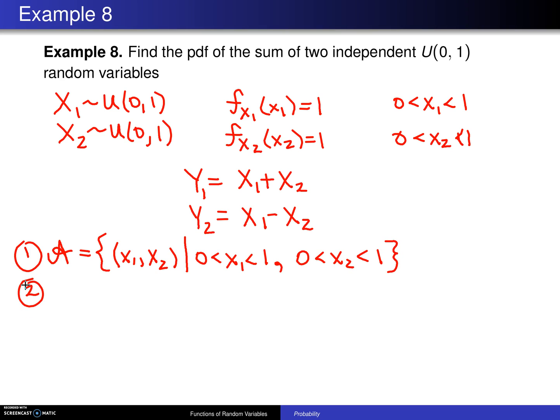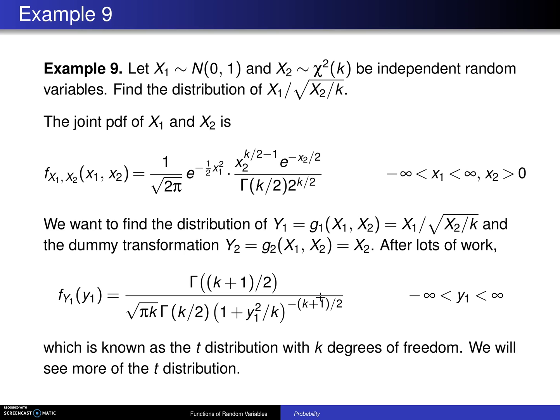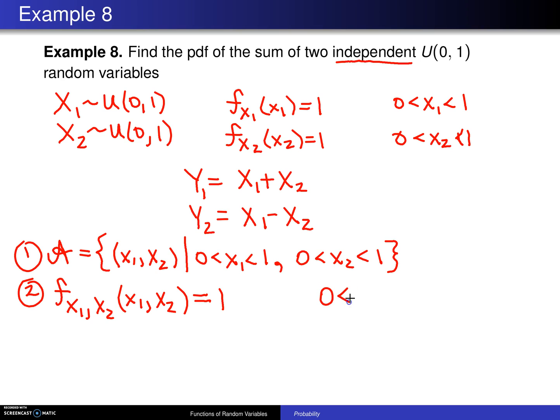That leads us to step 2. In step 2, we determine the joint probability density function of x1 and x2. Now, in this particular case, because we have assumed that the two random variables are independent, we know that the joint distribution will be the product of the two marginal distributions. 1 times 1 is 1, so that will be defined for x1 values between 0 and 1, and x2 values also between 0 and 1. So that completes step 1 and step 2.